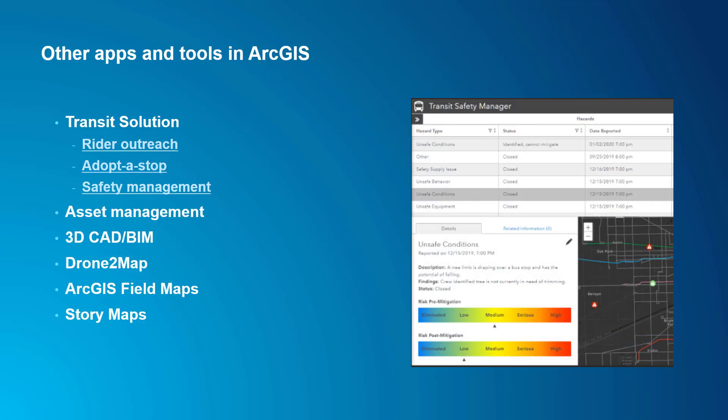My focus in this video series is on analysis using public transit data, in particular the geographic and scheduled data that affect passengers. There are some other great tools and products available in the ArcGIS platform that may be of interest to you, but these are outside the scope of this video series. The ArcGIS Solutions for Local Governments transit solution includes configurable apps and templates for rider outreach, adopt-a-stop program management, and transit safety management. There are also plenty of other valuable tools and products not specific to public transit but likely useful to transit agencies, like tools for asset management, 3D data and drone surveying, mobile apps for field work, and story maps for communicating with stakeholders.